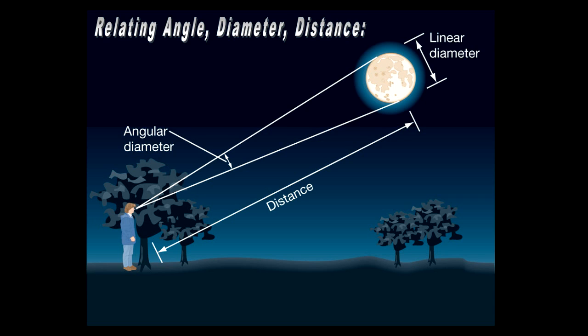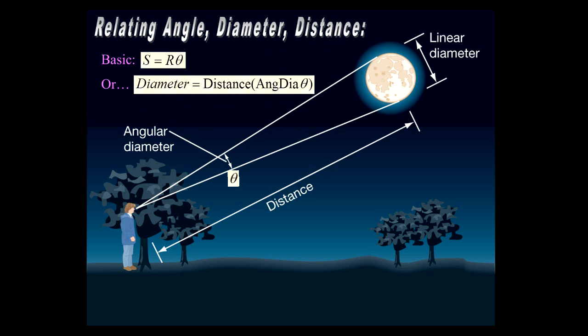Well, this slide will just be a little bit more mathematical, which we may use in exercises or lab activity. It's such a useful formula, even if we don't use it extensively, I want you to be familiar with it, which is relating angle, diameter, and distance to an astronomical object. So here's the basic formula: s = r θ. I know that's impressive. Let me say it a different way. The diameter of an object way out there is equal to the distance to that object times the angular diameter.